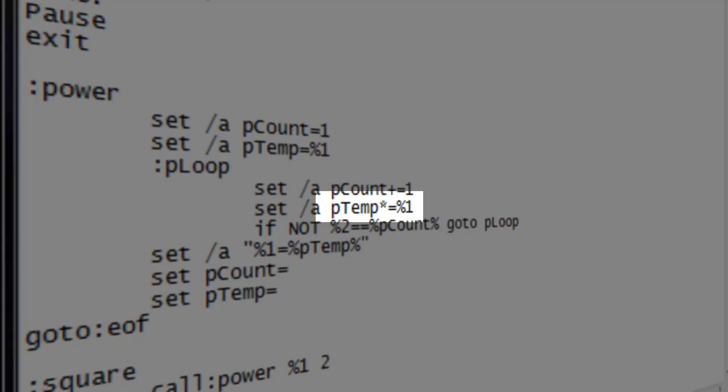The first time through the loop, this will be itself times itself.